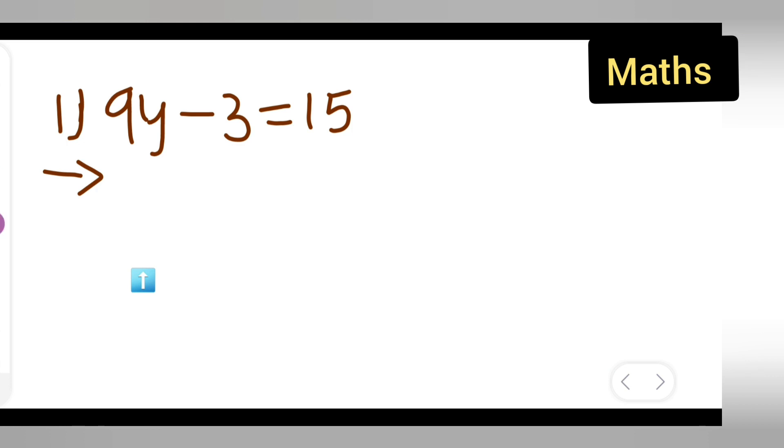First, I can take down the question: 9y-3 is equal to 15. So take the variable one side and constant other side. 9y is equal to 15 plus 3.